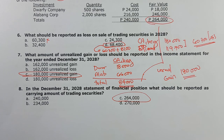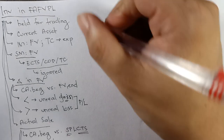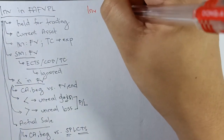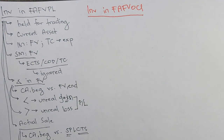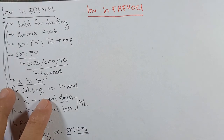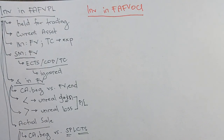So that is investment in financial asset at fair value through profit or loss. Now discuss ngayon natin si investment in financial asset at fair value through other comprehensive income — FVOCI. Kapag FVOCI, meron tayong tatlong requirement: una, dapat may fair value na given; pangalawa, dapat not held for trading yung mga shares; and pangatlo, dapat irrevocably designated at OCI.